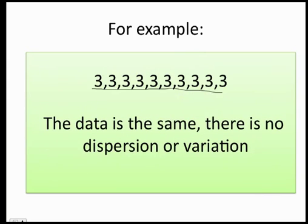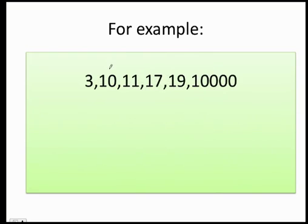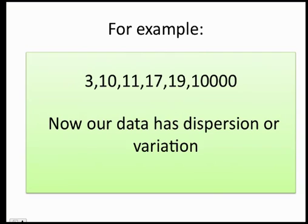But what happens if I have something like this? 3, 10, 11, 17, 19, 10,000. Well in this case I can see that my data is not the same and there is actually dispersion. So how do I measure that?